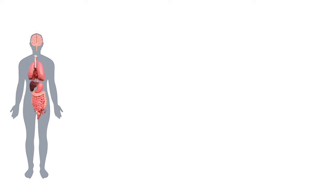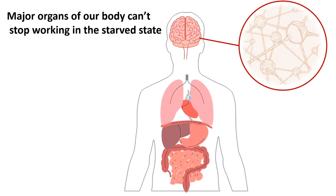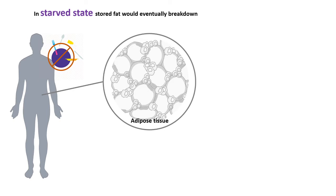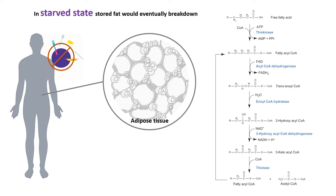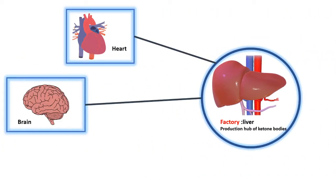Let's look at how ketone body generation takes place under the fasted state. The liver is producing ketone bodies which would be utilized by the brain and many other extra-hepatic tissues such as cardiac muscle and kidneys. Brain cannot stop working, so it needs an alternative fuel — and that reserve fuel would be ketone bodies. In the starved state, the source of ketone body biogenesis comes from the adipose tissue. The adipose tissue breaks down triglyceride to give rise to fatty acid, and the fatty acid is oxidized to give rise to acetyl-CoA. That acetyl-CoA can be used to generate ketone bodies. Once ketone bodies are generated in the liver, they can be used in the heart, brain and kidneys.